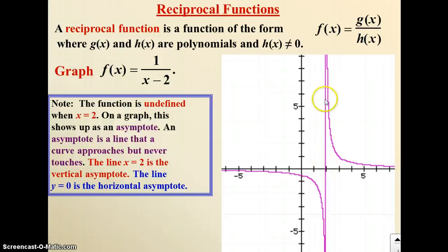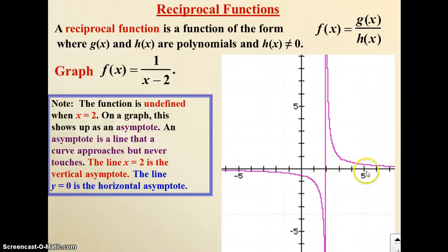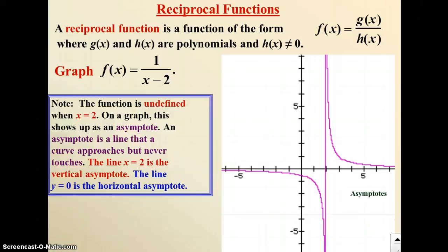An asymptote is a line that the curve approaches. We can see it approaches from the top and from the bottom, but it never, ever touches. So we call the line x equals 2 the vertical asymptote. We also have a horizontal asymptote on the x-axis, which is y equals 0. So our asymptotes are the line x equals 2 and the line y equals 0.